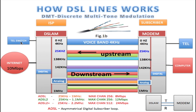Starting at the top with the telephone switch or telephone signal — the voice signal — it runs between 0 Hz and 4 kHz. The telephone actually samples your voice between 300 Hz and 3.4 kHz. There is an open section here to prevent any interference between the upstream data and the voice channel. The data channels start at 25 kHz and go up to 138 kHz, and they are all 4 kHz channels.